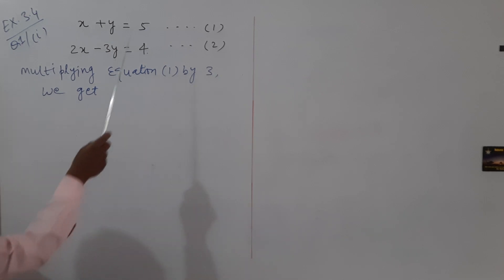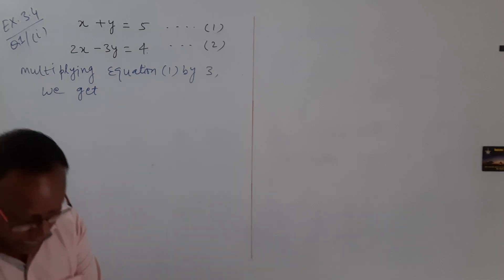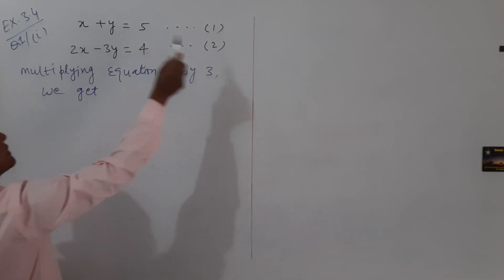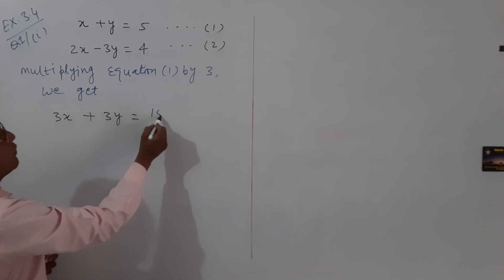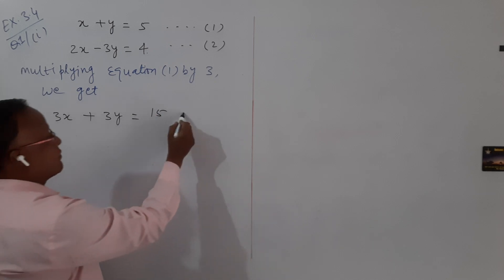Now I am multiplying equation 1 by 3. When you multiply equation 1 by 3, 3 multiplied by x gives 3x plus 3y equals 15. This becomes our equation 3.